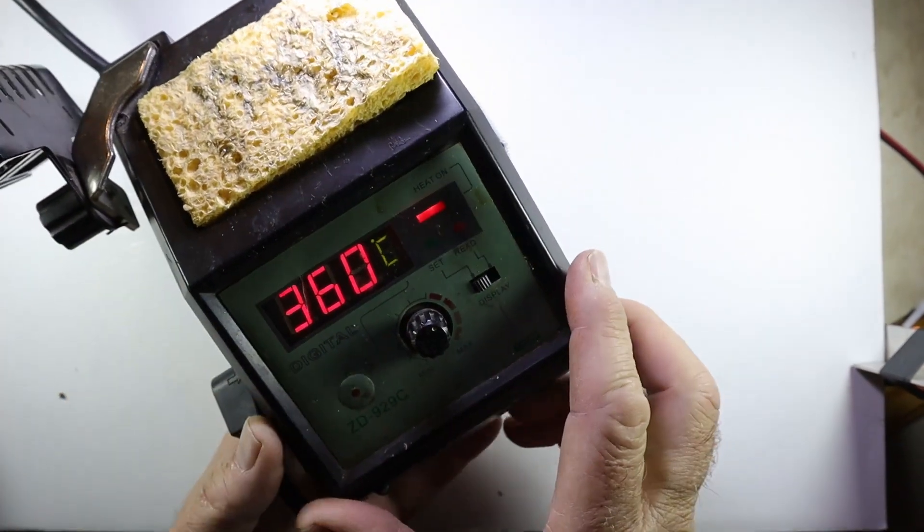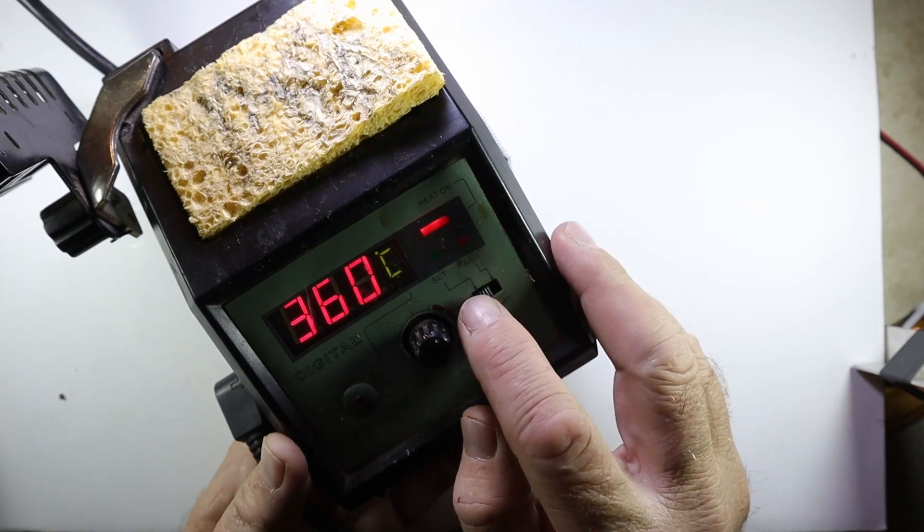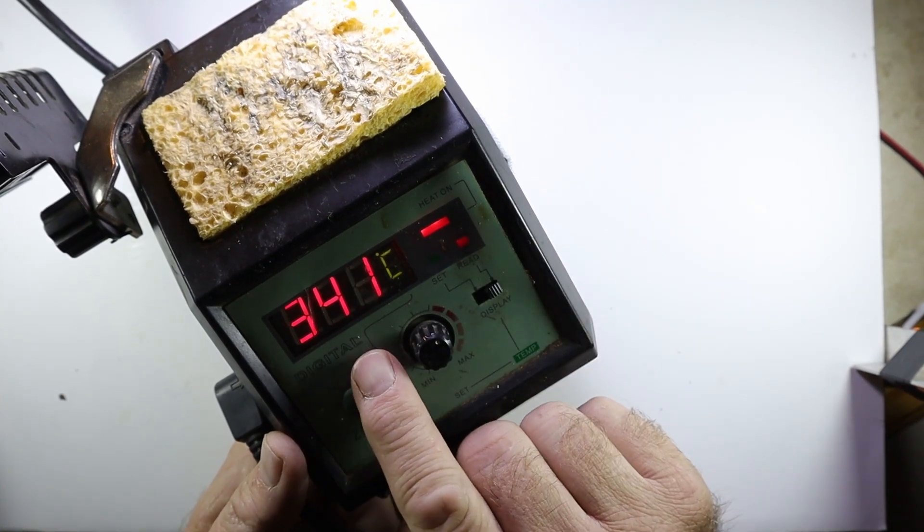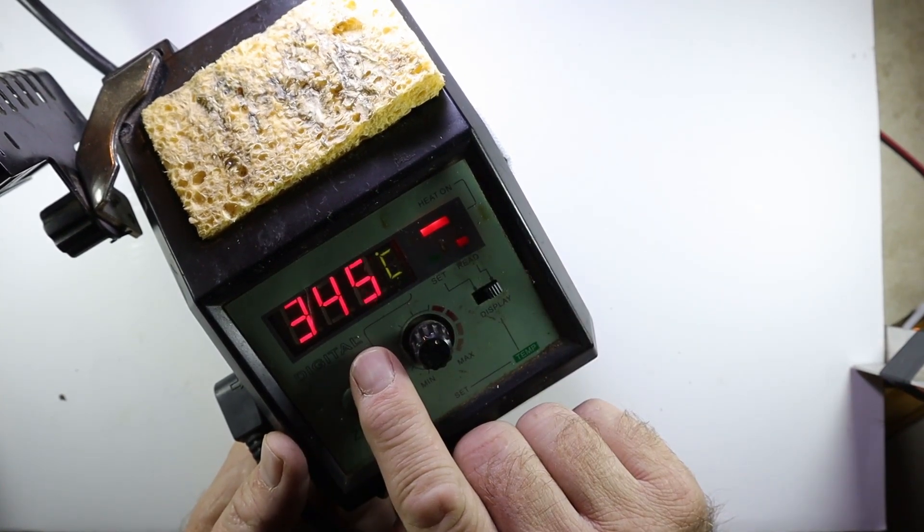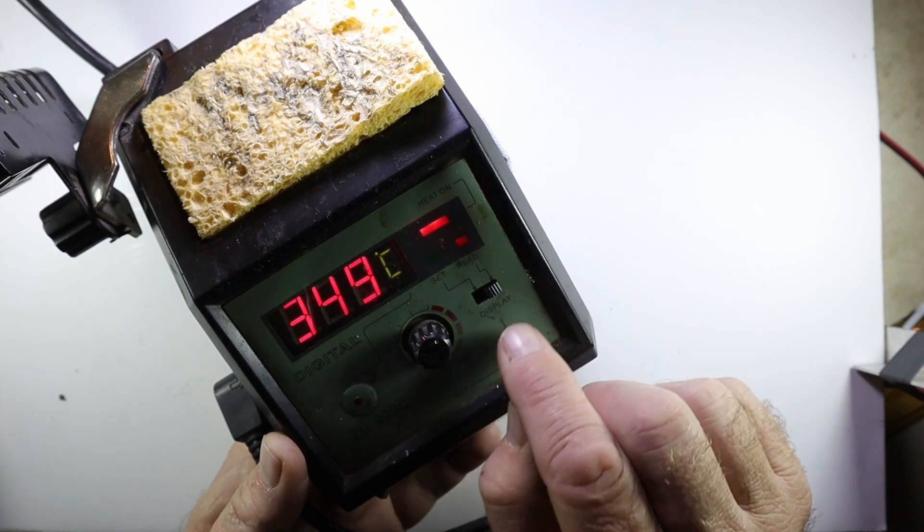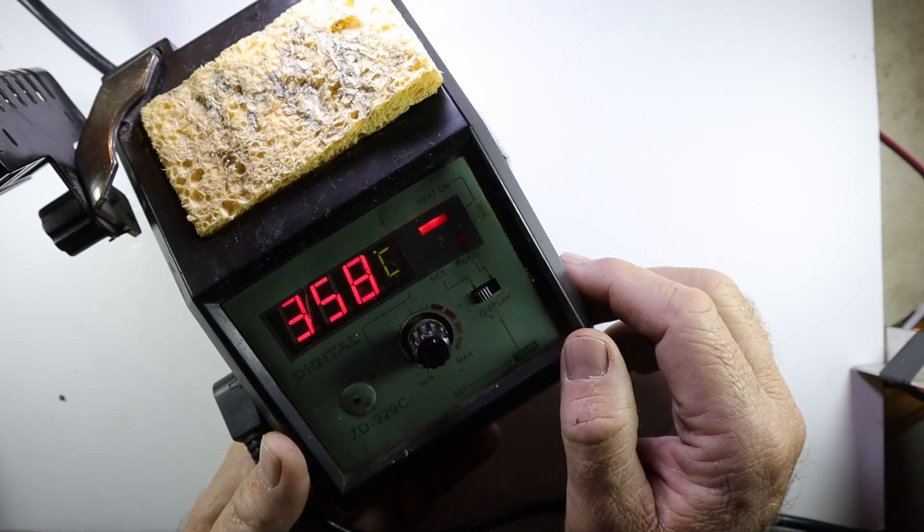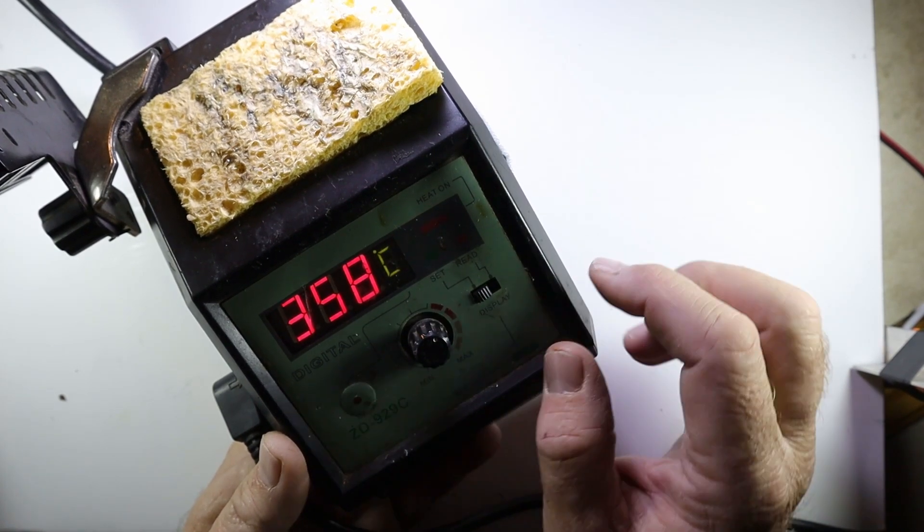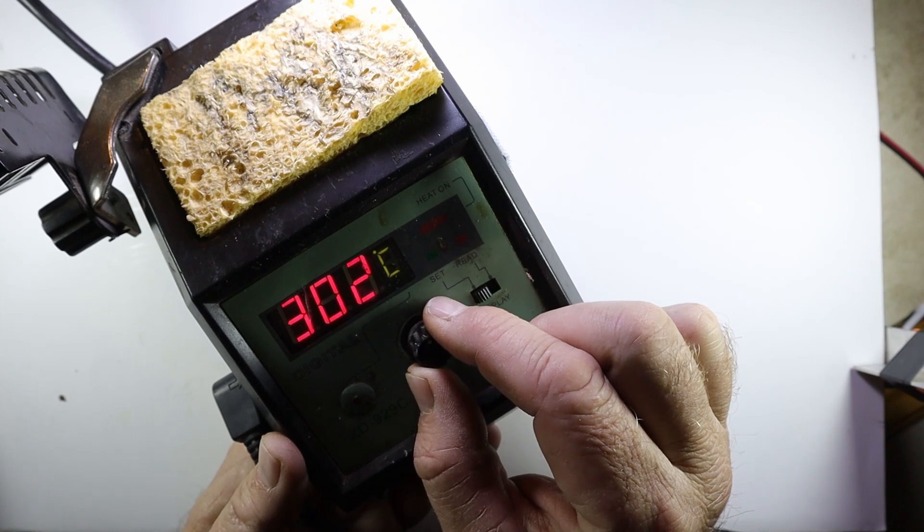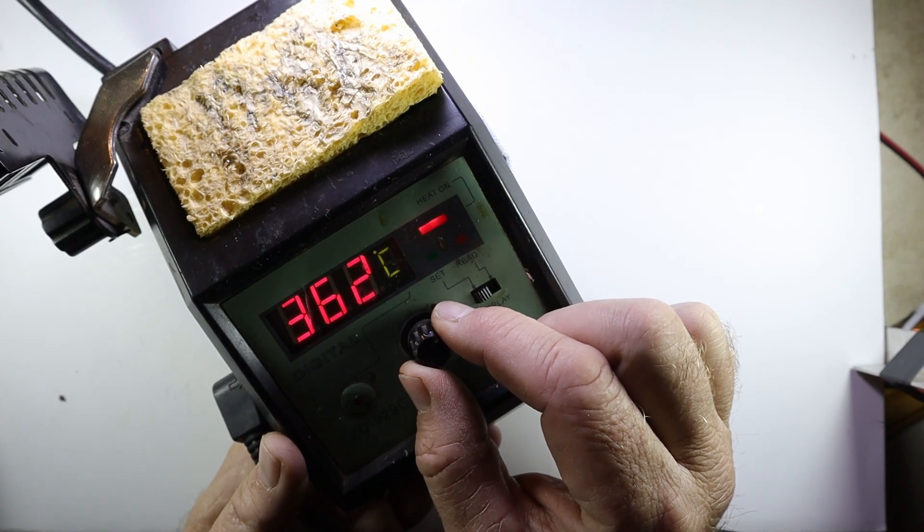Let's have a look at the settings of the station. You will see there's two settings: one is read and the other one set. If you set it to read, then it will read the current temperature of the tip of the iron. If you set it to set, then you will be able to set your desired temperature for your iron.